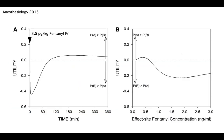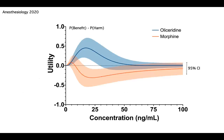An example: this is the utility of the probability of analgesia minus the probability of respiratory depression for fentanyl. We see that it becomes negative — the utility of fentanyl is predominantly negative, because there is always a higher likelihood of respiratory depression than analgesia. But is that always the case? No. There are some drugs that show a positive distinction in utility.